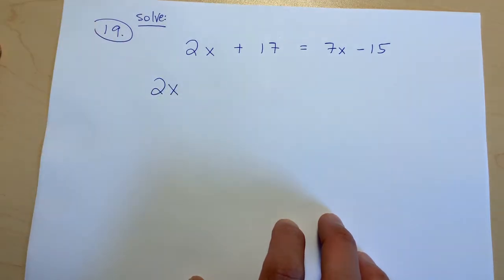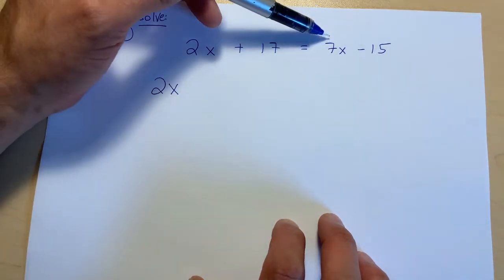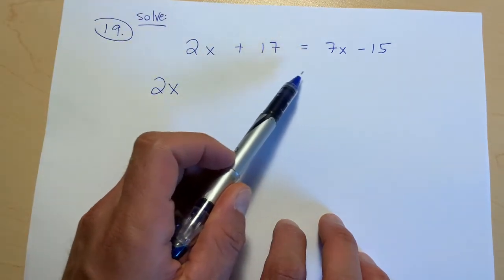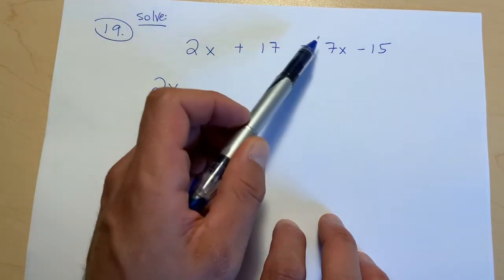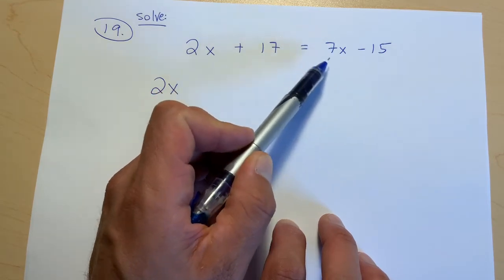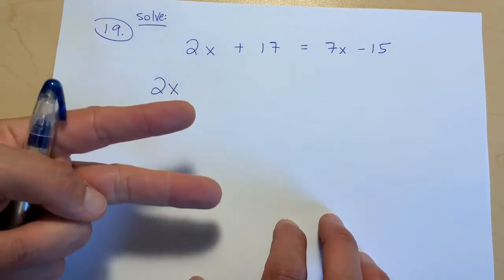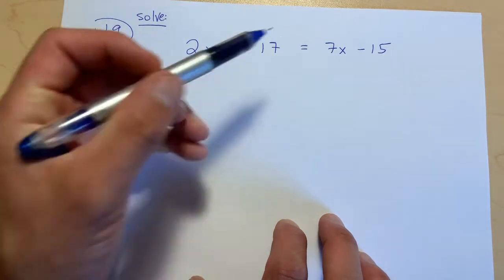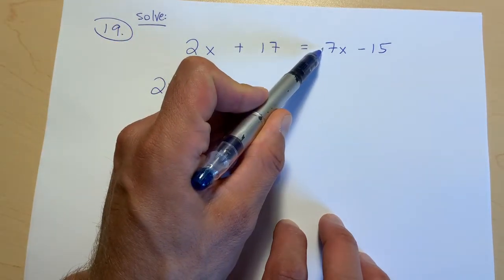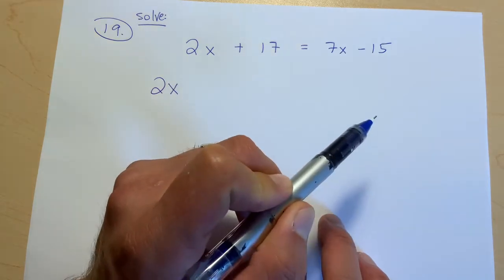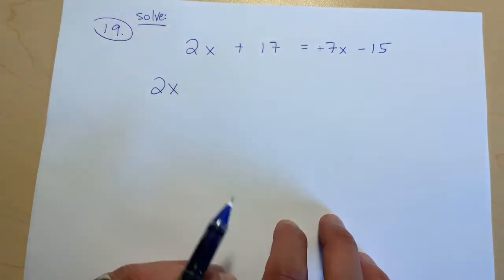And this 7x, this 7x we want to bring over the equal sign. So if we go to move something and we move it over the equal sign, it flips in sign. Okay, so we're going to assume here that this is positive, right? We don't see anything else otherwise, so we're going to assume it's positive.